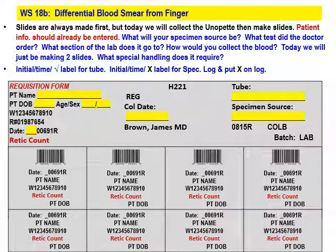Moving on to differential blood smears from fingers. Here's another requisition. Slides are always made first when you're doing finger sticks — when we're in lab we may do things differently, but out in the real world, no matter what you're doing, if you're doing a CBC with a diff or anything requiring slides, you make those slides first. Your requisition would already have all the patient information. If it doesn't look correct, stop what you're doing and get with somebody to straighten it out before you stick your patient.